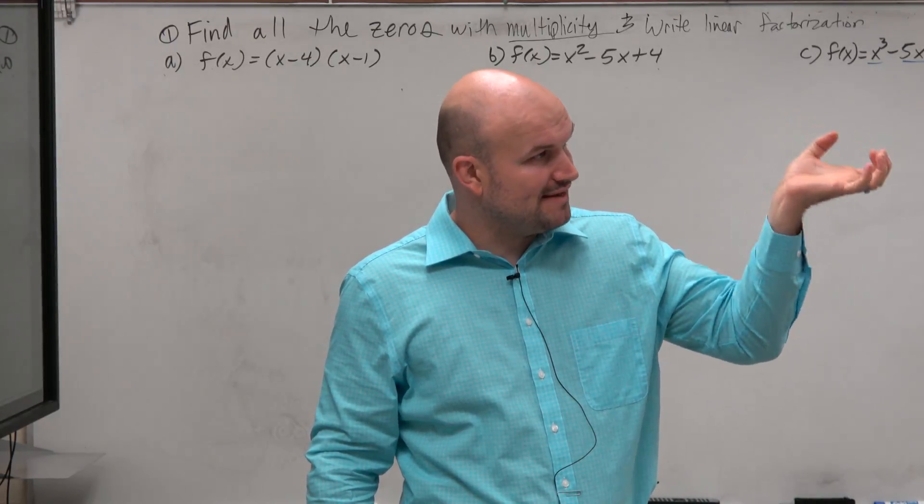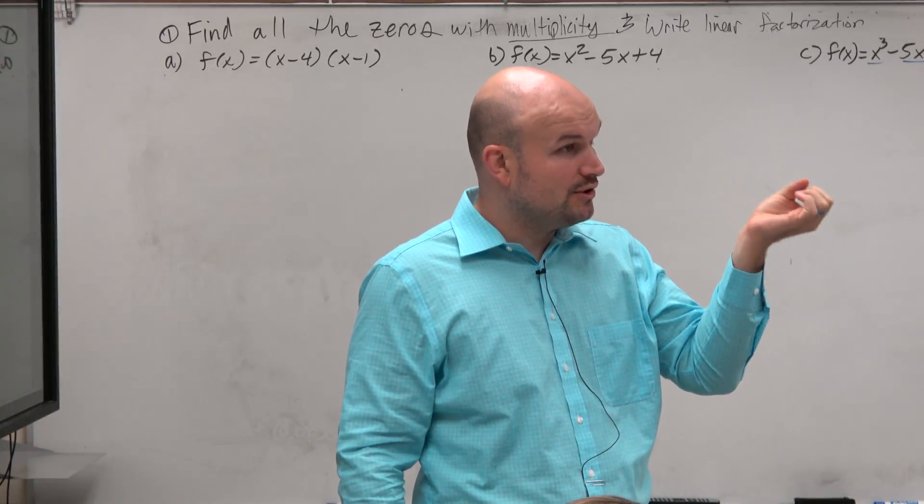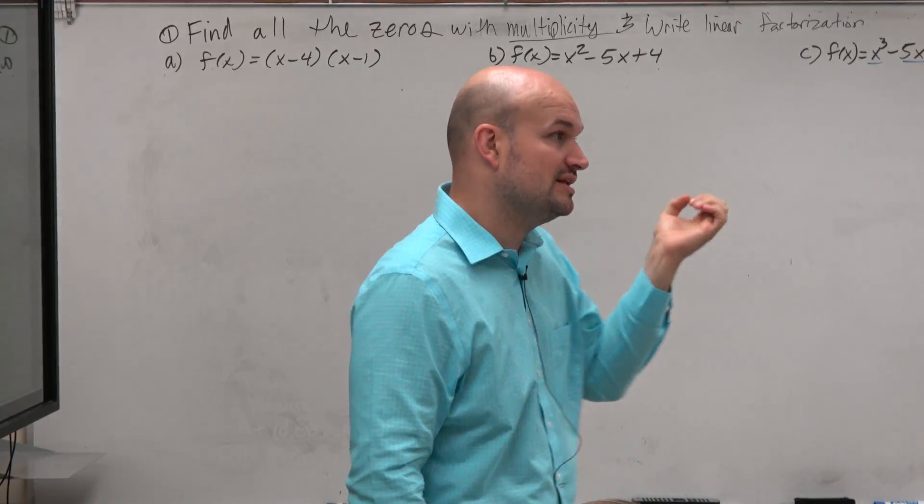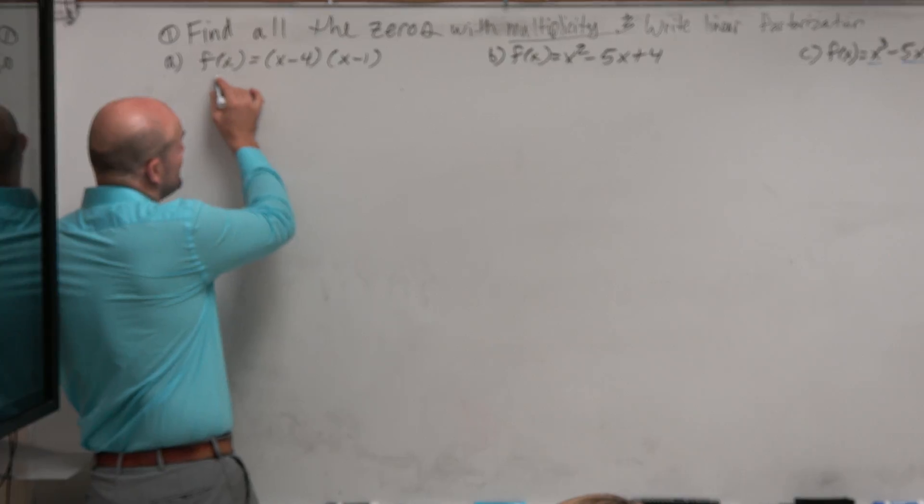And the main important thing is we have to understand the definition of the zeros. The zeros are the values of x that make the equation true for f(x) equaling 0. So the first thing we're going to want to do is make sure we replace f(x) with 0.